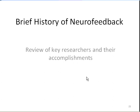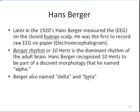Now let's have a brief history of neurofeedback. When we start a history of neurofeedback, we think first of Hans Berger. In the 1920s, he was the first to measure the EEG on the closed human scalp and the first to create the electroencephalogram — the raw EEG on paper. The Berger rhythm, or 10 hertz, was discovered by Hans Berger. He recognized that 10 hertz is the dominant rhythm of the adult brain and that alpha was the discrete morphology best seen with eyes closed. He also named other brain wave morphologies such as delta and beta.